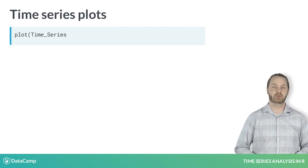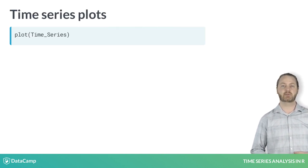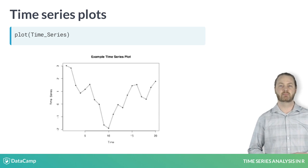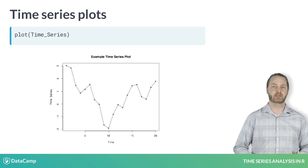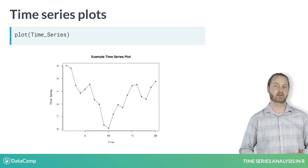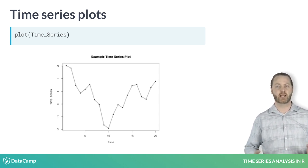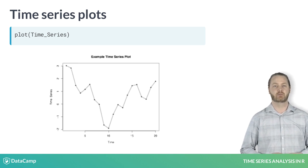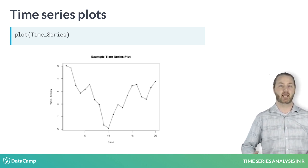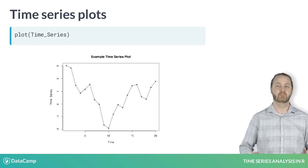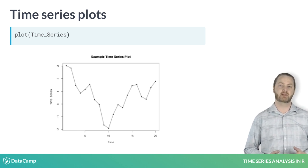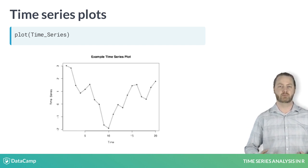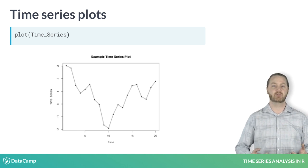The plot function can be used to make a basic time series plot. The defining feature is that time is indexed on the horizontal axis, and the observations are shown from the first on the left to the last on the right. A line is commonly added to connect neighboring observations, to improve interpretability, and to emphasize any trends or patterns.